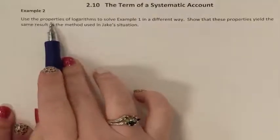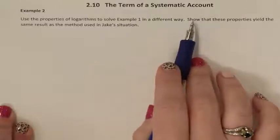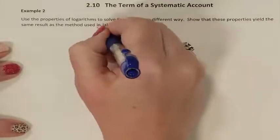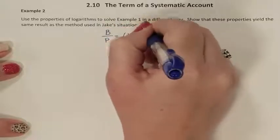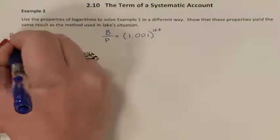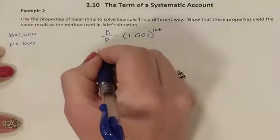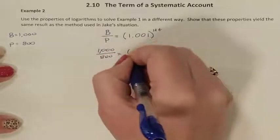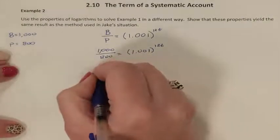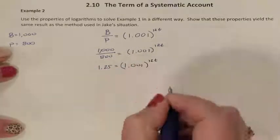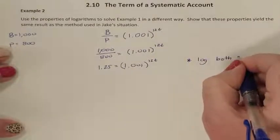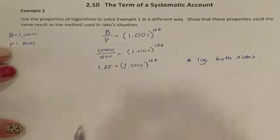Example number 2: use the properties of logarithms to solve example number 1 a different way, and show that these properties yield the same result. We currently have B over P equaling 1.001 to the 12t power, where B is 1,000 and P is 800. So this is 1,000 divided by 800 equaling that expression. First, 1,000 divided by 800 is 1.25. Now we use the one-to-one property, which says we can take the log of both sides.